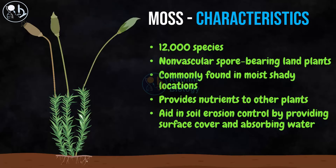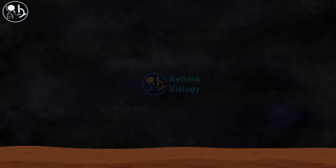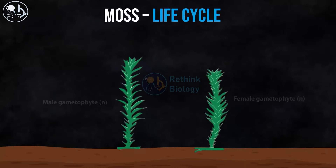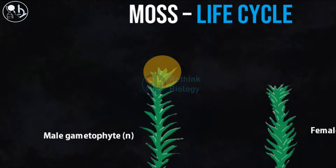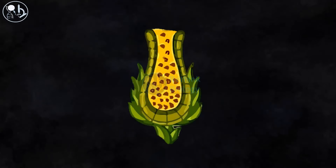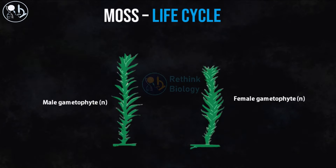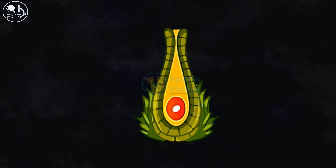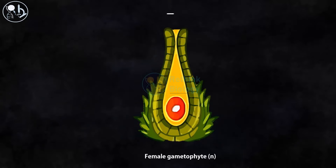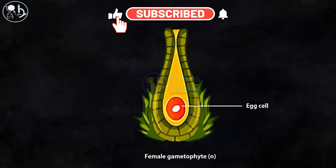The predominant stage in the lifecycle of moss is the gametophyte. It possesses two types of haploid gametophytes: male and female. The male gametophyte produces sperm by mitosis inside a structure called antheridia. The female gametophyte produces eggs inside a structure called archegonia, also produced by mitosis.